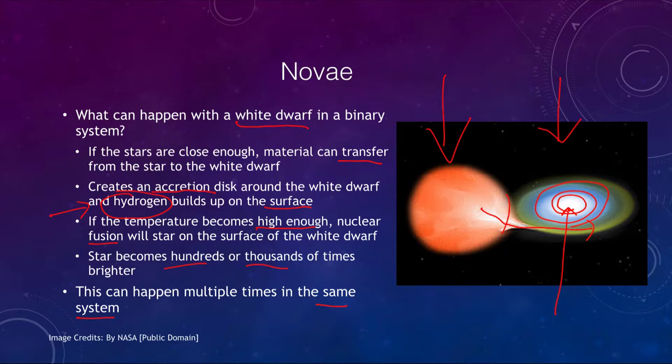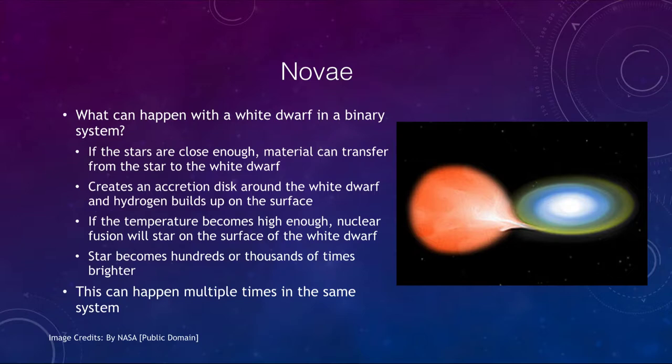Some of these novae can occur over and over again, as long as the companion star is still transferring material. Generally this happens when the companion star evolves and becomes a red giant. When it becomes a red giant, it expands to many times its original size, allowing its outer layers to get closer to the white dwarf and enabling mass transfer to begin.